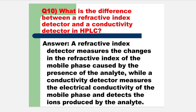What is the difference between a refractive index detector and a conductivity detector in HPLC? A refractive index detector measures the changes in the refractive index of the mobile phase caused by the presence of the analyte, while a conductivity detector measures the electrical conductivity of the mobile phase and detects the ions produced by the analyte. These are all the most frequently asked questions of HPLC during an interview. Thank you.